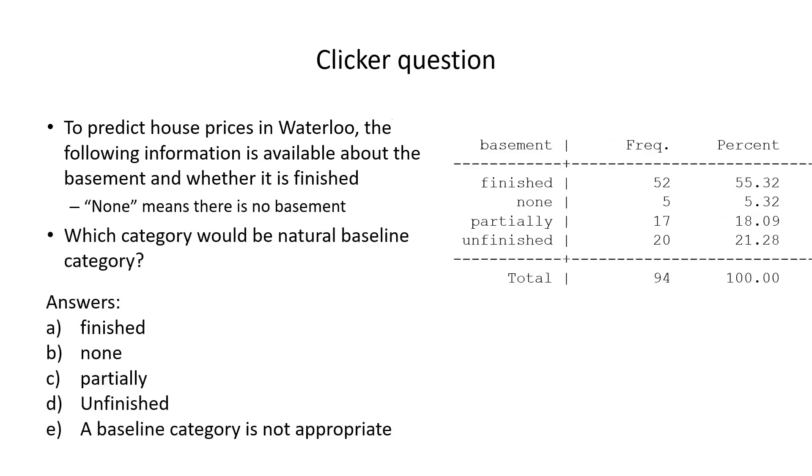So here is a clicker question. To predict house prices in Waterloo, we have information about the basement. The basement could either be none (meaning there is no basement), finished, partially finished, or unfinished.